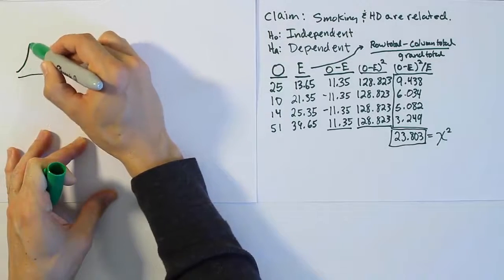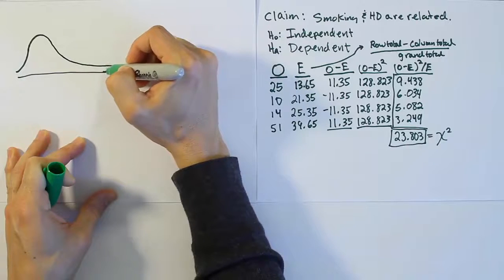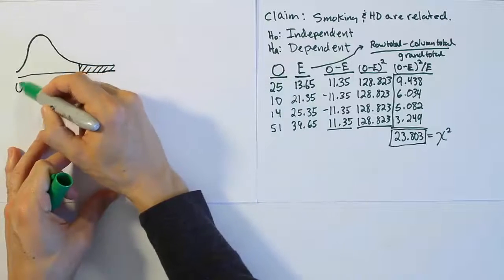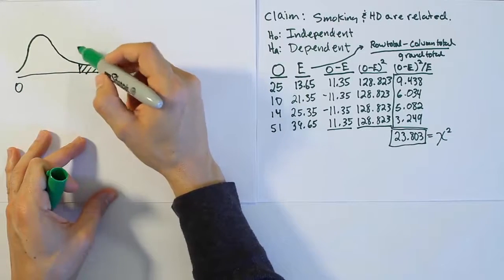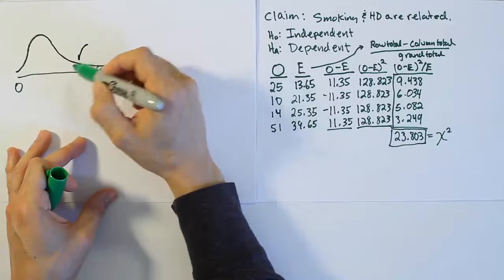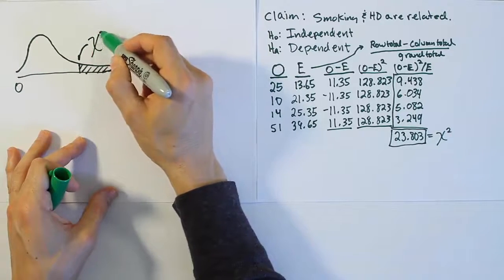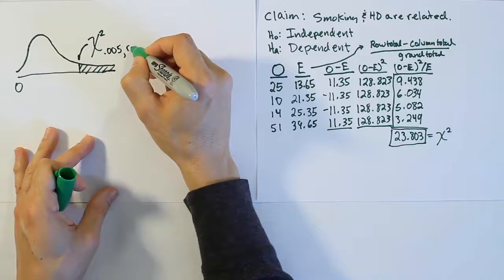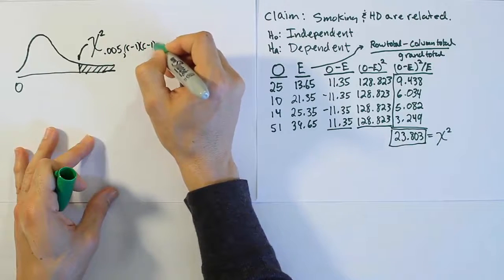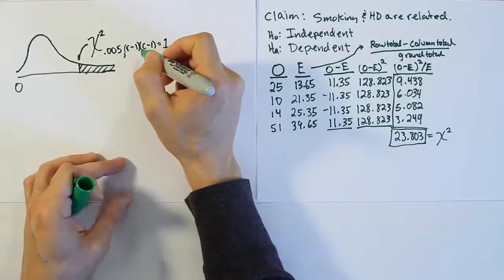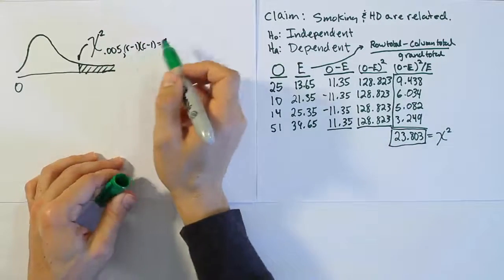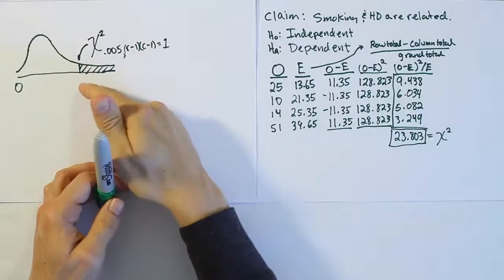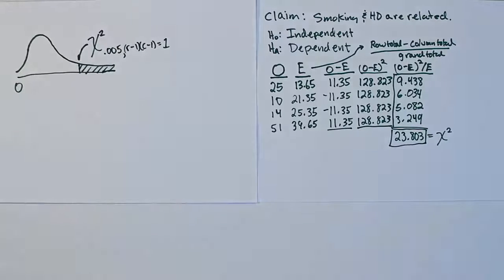Let's take a look at our rejection region now. We'll draw a chi-squared curve here. Remember our test is a right-tailed test, so the rejection region is here on the right. We're looking for the chi-squared critical value at that location that separates the reject region from the do not reject H0 region. This chi-squared value will be alpha 0.005. The degrees of freedom is the number of rows minus one times the number of columns minus one, which in our case is one because we had two of each. We'll go to the table, look up 0.005 and the number one and we'll come up with our critical value.